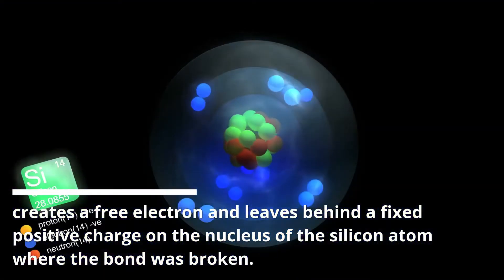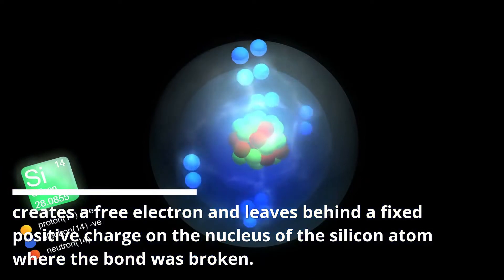This creates a free electron and leaves behind a fixed positive charge on the nucleus of the silicon atom where the bond was broken.